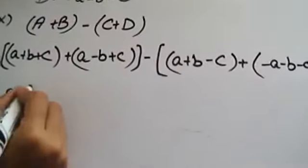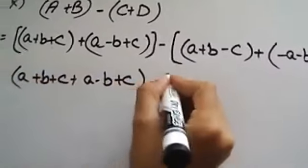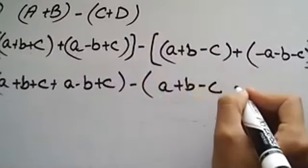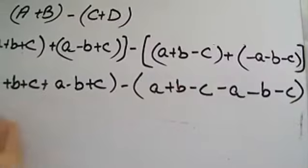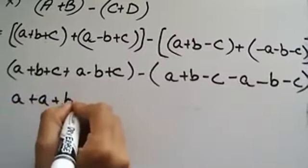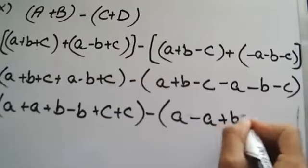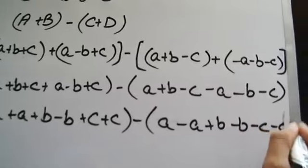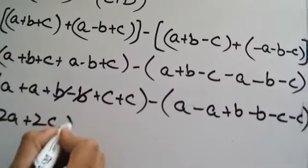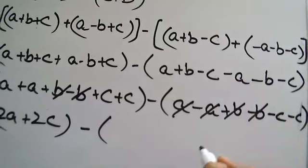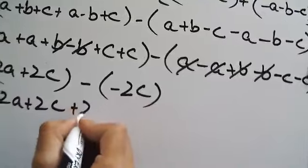Substituting all values: a plus b plus c, plus a minus b plus c, minus a minus b, minus c, and minus a minus b minus c. After arranging: a plus a minus a minus a gives 2a. The plus and minus b values cancel out. For c: plus c plus c minus c minus c gives terms; and minus c and minus c remain.